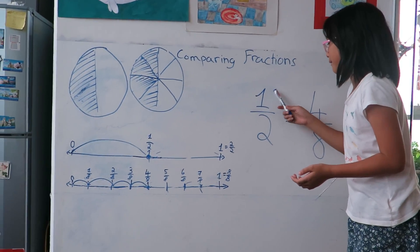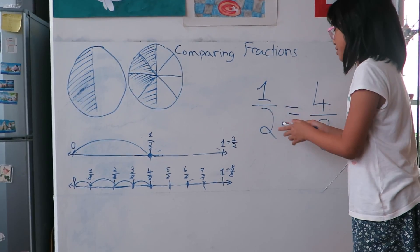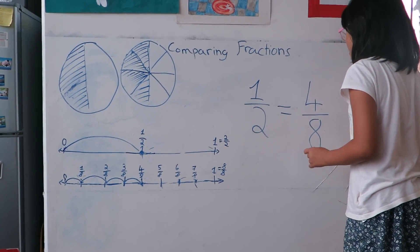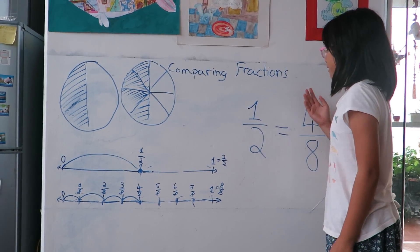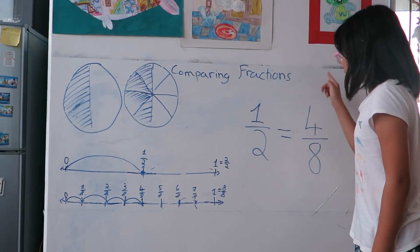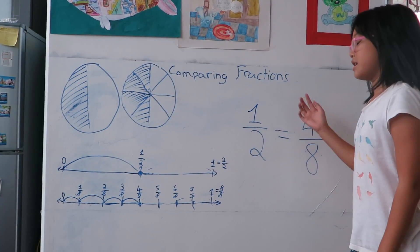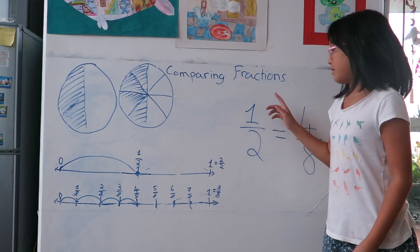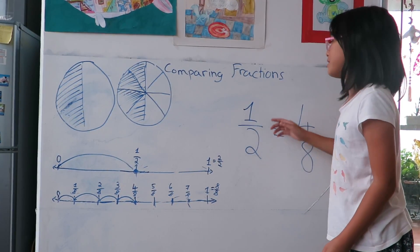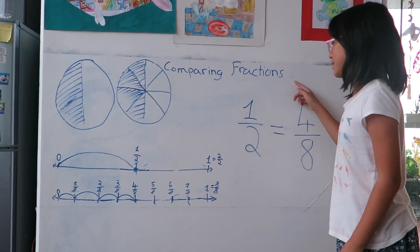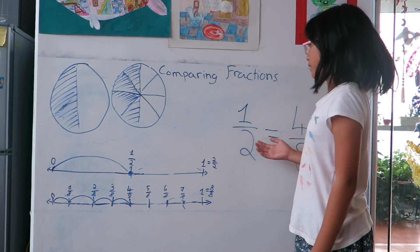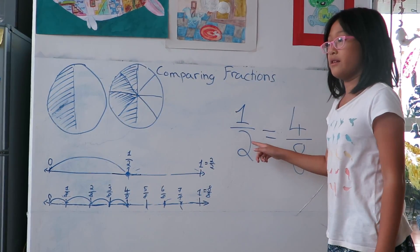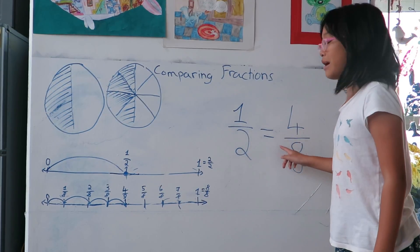That means one is a half of two and four is a half of eight. And that means these two fractions are equal to a half. And therefore, they are equivalent.